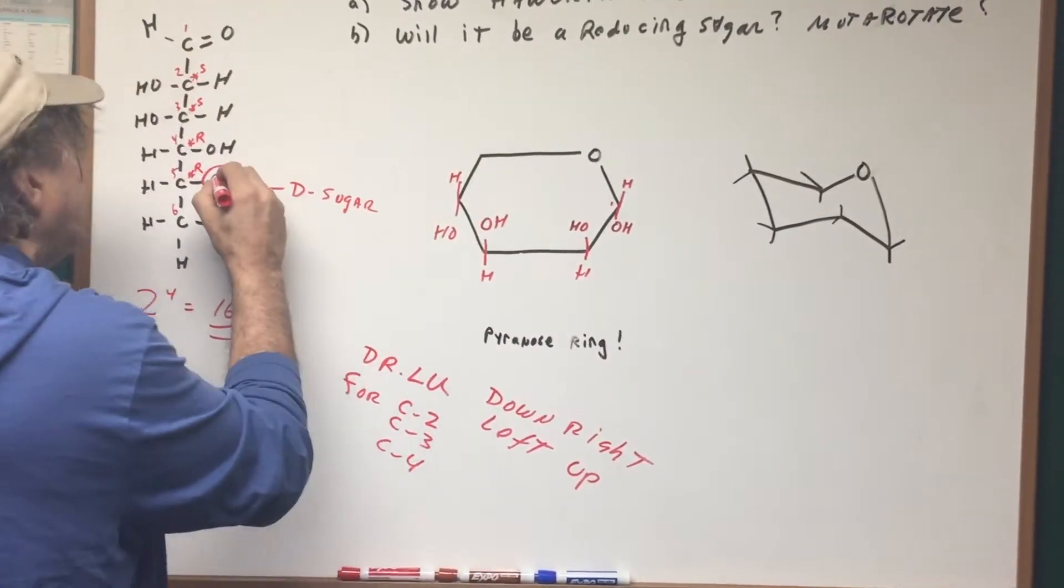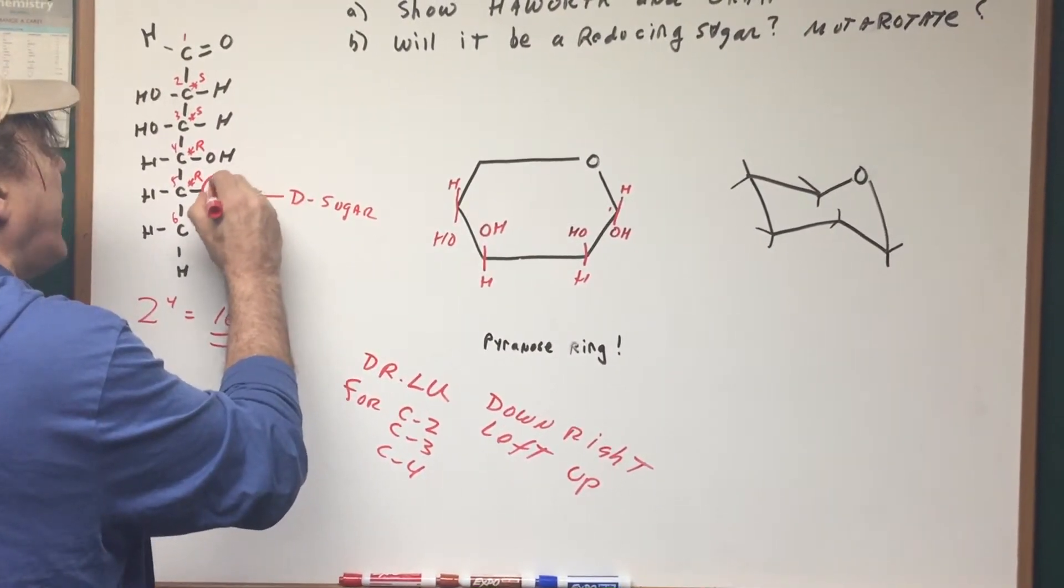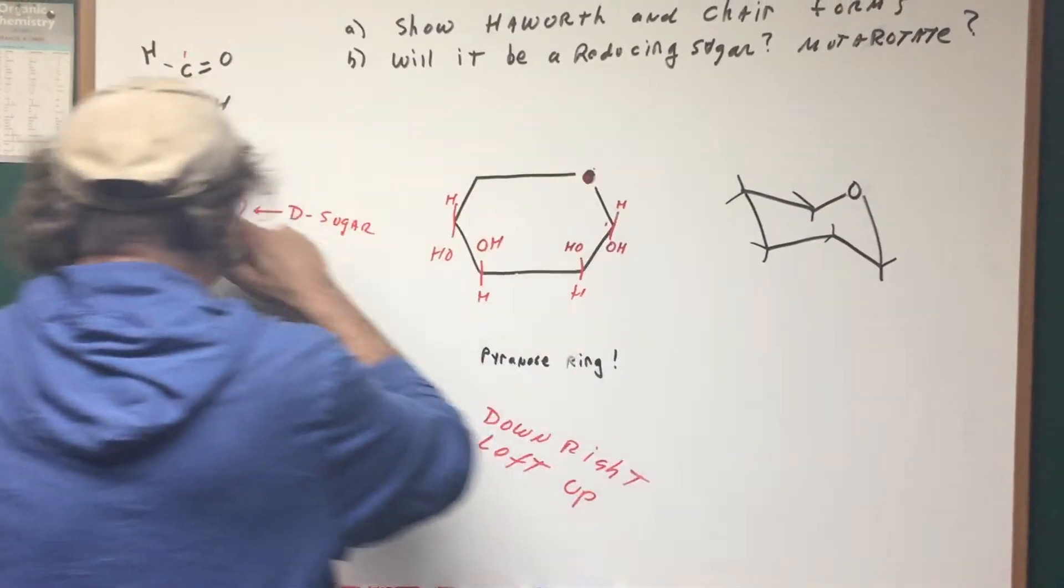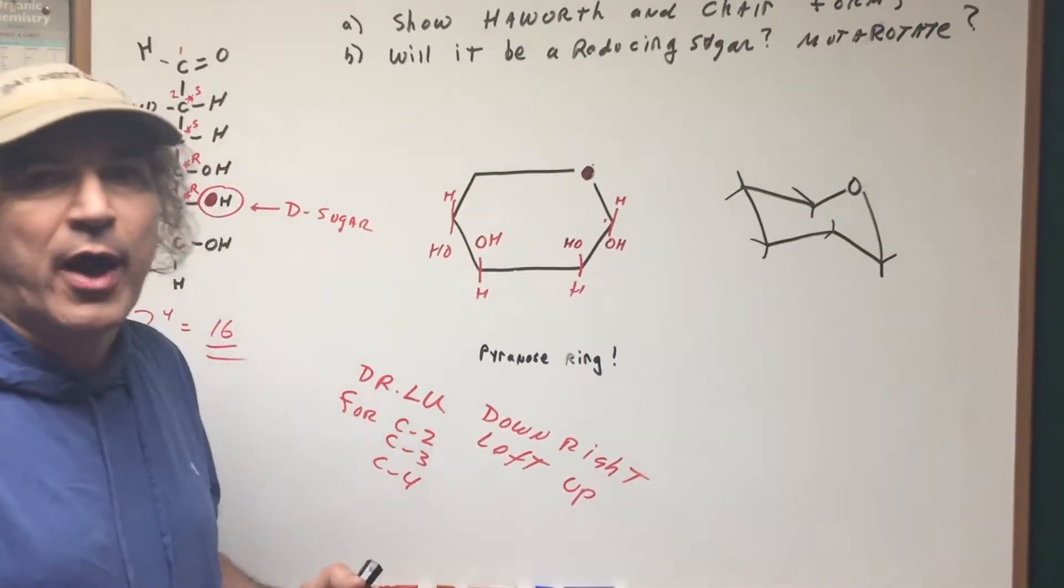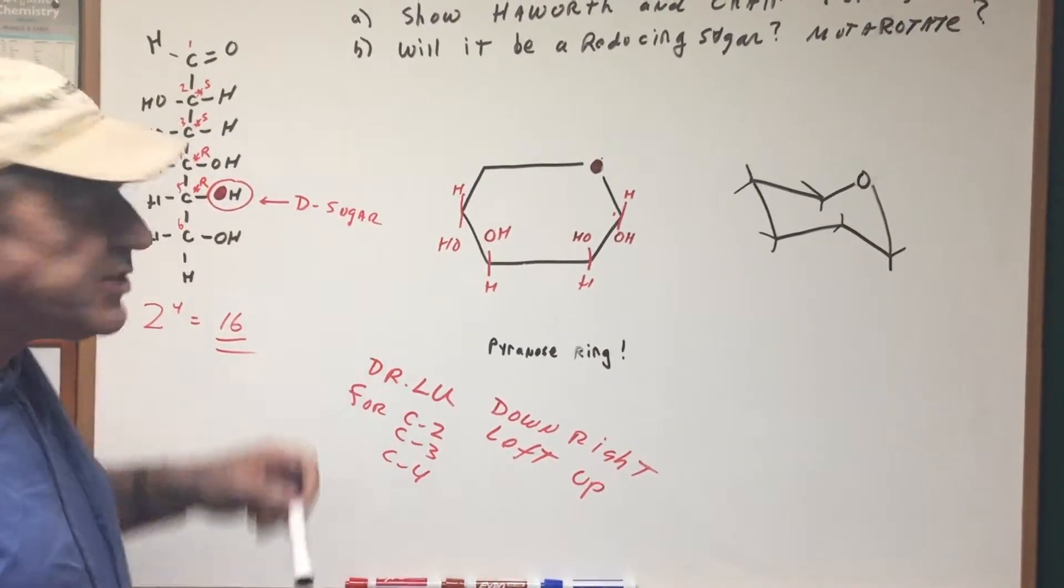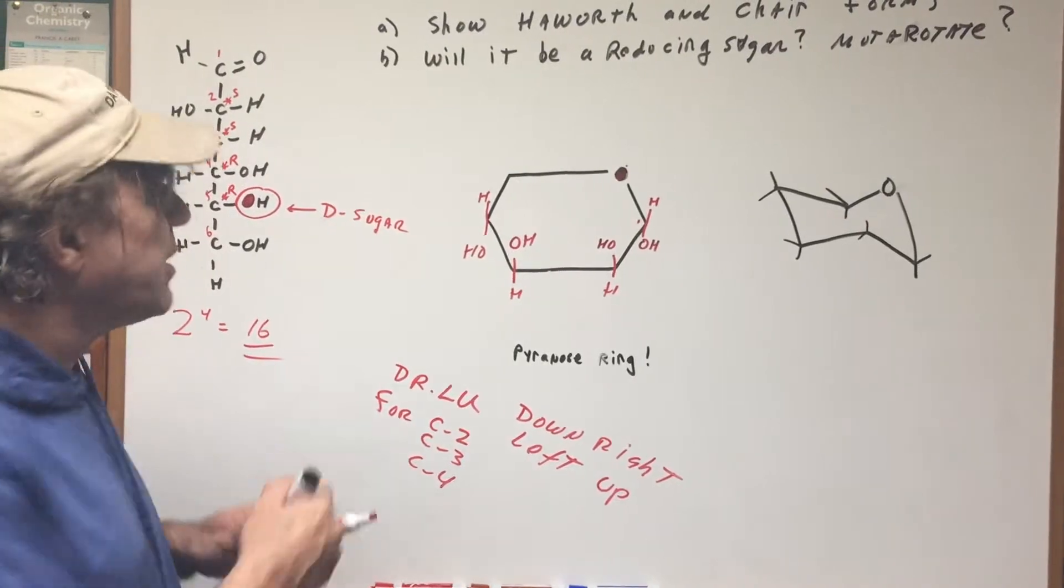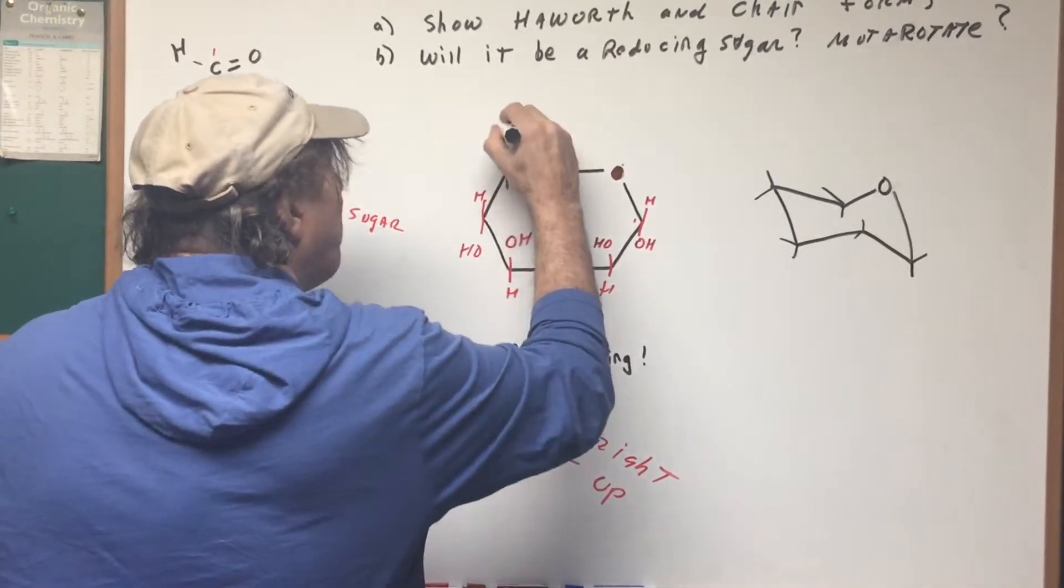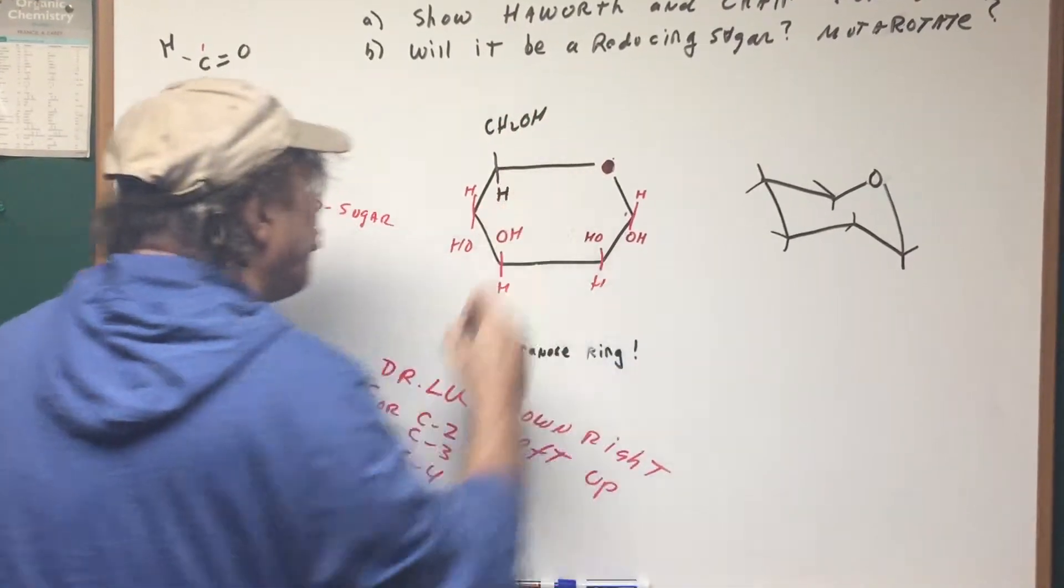All right. Carbon number five, which is right here, I'll color it in. That's this carbon right here. So you don't worry about the OH in carbon five, because that was my connecting link. The last thing is if it's a D sugar, and it is, this whole group gets placed above the plane of the ring, like such.